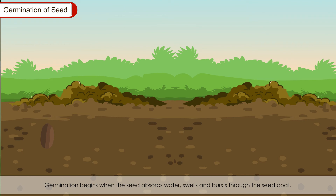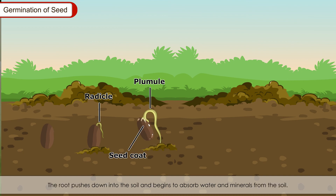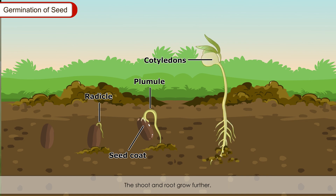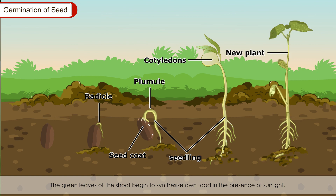Germination begins when the seed absorbs water, swells and bursts through the seed coat. Water helps make food soluble and available for the tiny plant inside to grow. The radicle grows first to form the root, which pushes down into the soil and absorbs water and minerals. After this, the plumule grows upwards to form the shoot. The shoot and root grow further; when the shoot comes above the ground it develops green leaves, which begin to synthesize food in the presence of sunlight. This seedling gradually grows into a full plant.